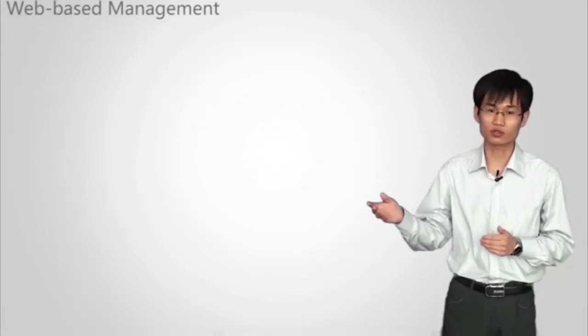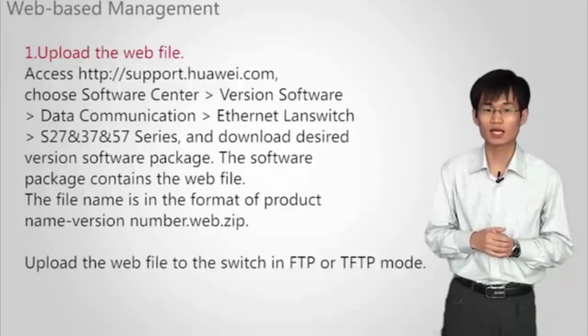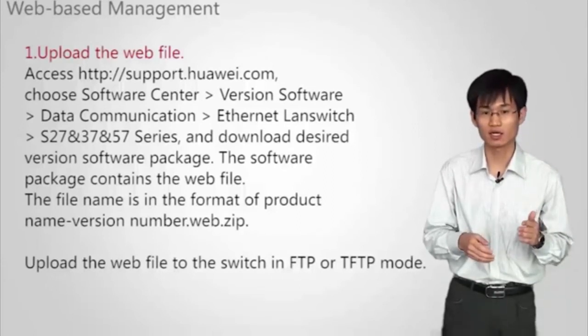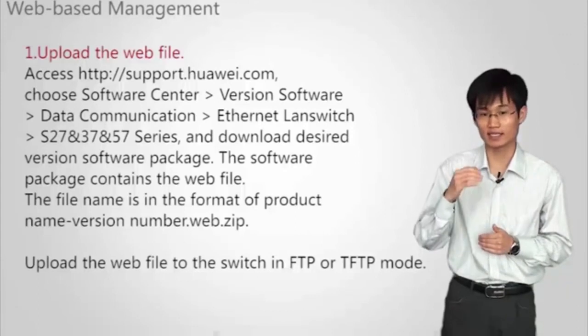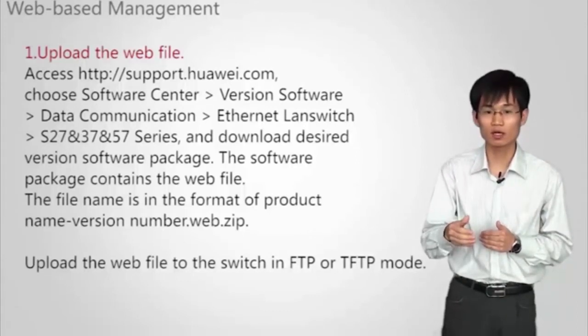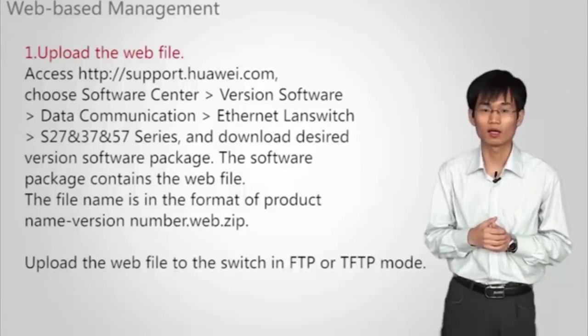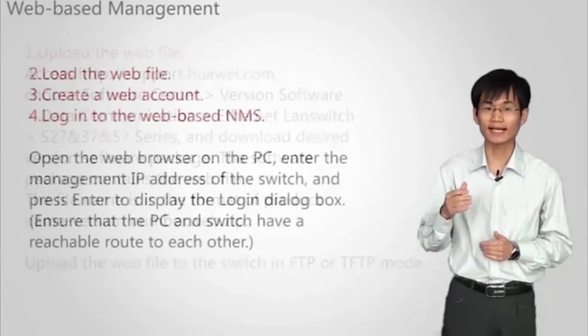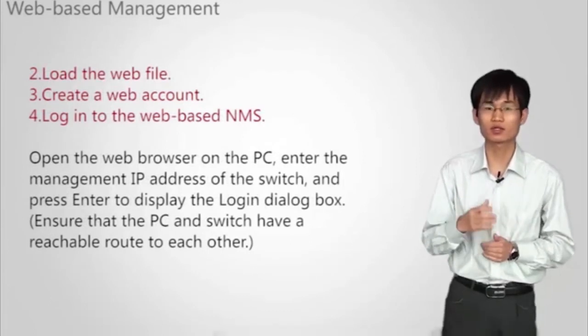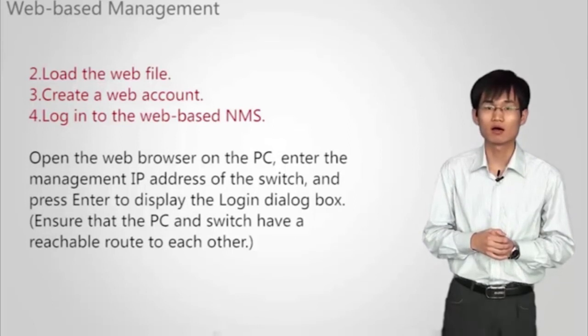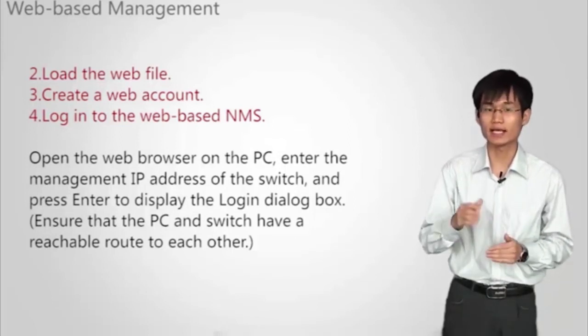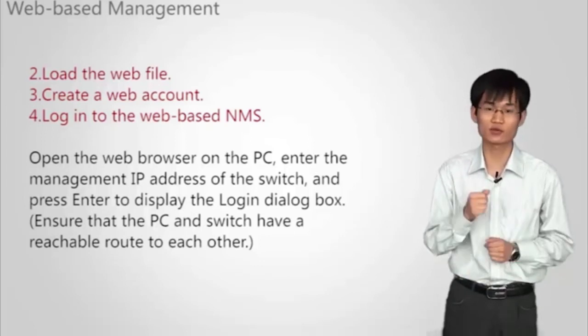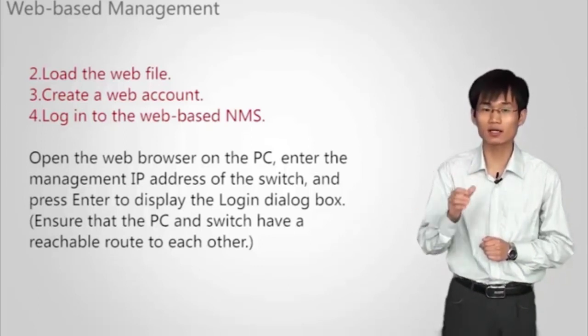The steps are as follows. First, upload the web file. Access and download the desired version software package. The software package contains the web file. The file name is in the format of product name, version number, dot web, dot zip. Upload the web file to the switch in FTP or TFTP mode. Second, load the web file. Third, create a web account. Finally, login to the web-based EMAs. Open the web browser on the PC, enter the management IP address of the switch, and press enter to display the login dialog box.